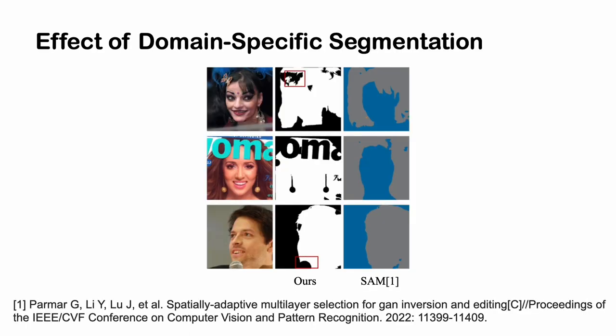SAM also proposed a learnable invertibility predictor to predict mask. We compare our proposed domain-specific segmentation to it and show the difference. Our method can better segment declarations, which is important for refinement.